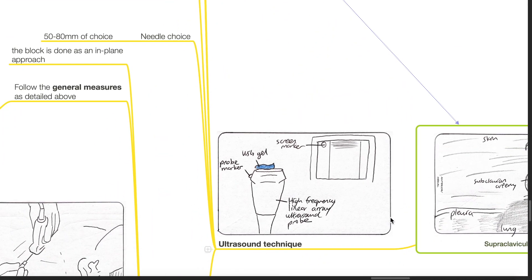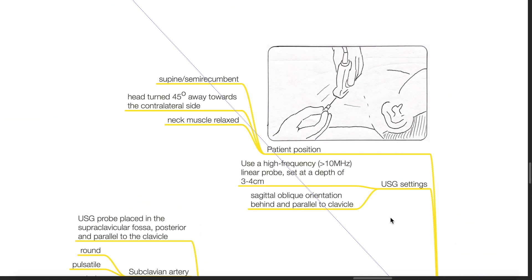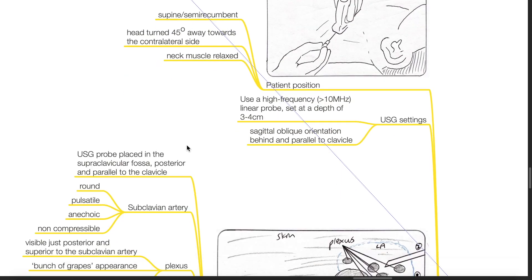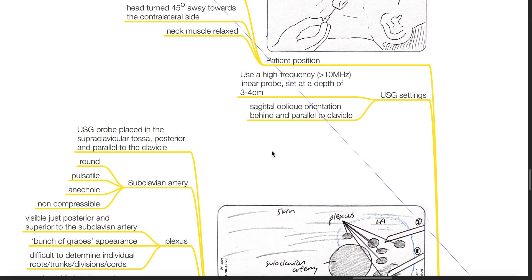Ultrasound technique. Patient position should be supine or semi-recumbent with the head turned 45 degrees away towards the contralateral side with neck muscles relaxed. Ultrasound settings: use a high-frequency, more than 10 MHz linear probe set at a depth of 3 to 4 cm with a sagittal oblique orientation behind and parallel to the clavicle.